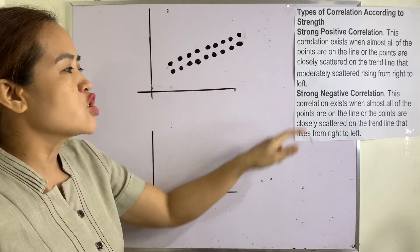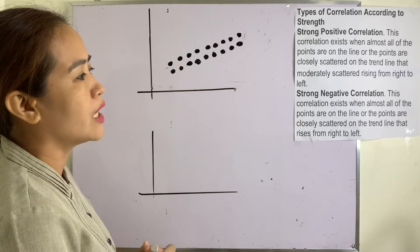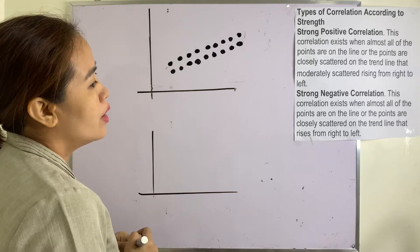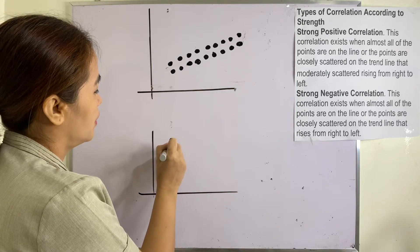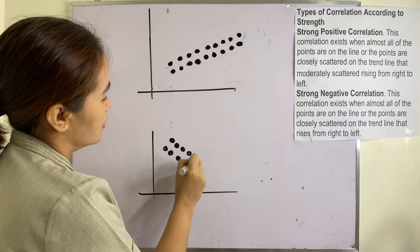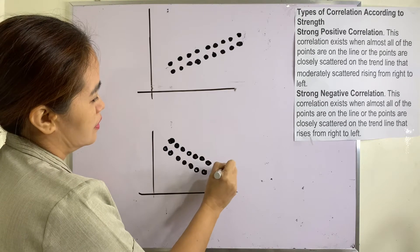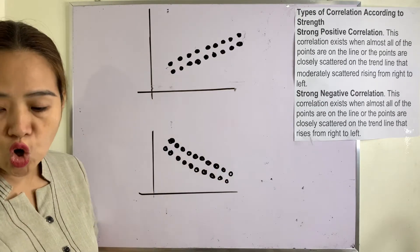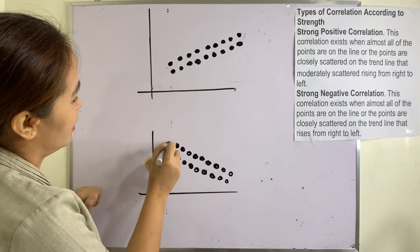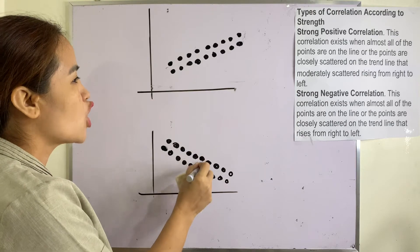Strong negative correlation exists when almost all of the points are on the line, or the points are closely scattered on the trend line that rises from right to left. This is how you illustrate it — the points are tightly grouped along the downward trend line. So this one is a strong negative correlation.